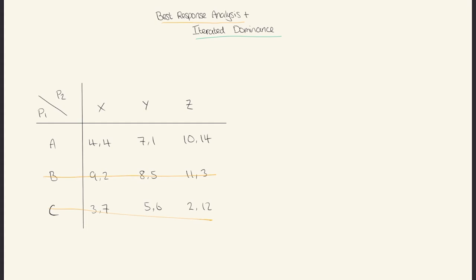If player one chose A, player two must choose between X, Y, and Z. We're going to ignore the first values in each cell because those represent player one's payoffs — we're considering what player two wants. Looking at the second values of X, Y, and Z when player one chooses A, we can see that Z gives the highest payoff for player two, so they would maximize their utility by choosing that option.